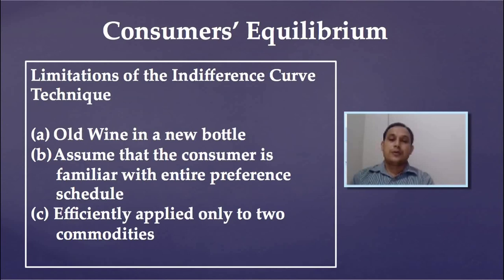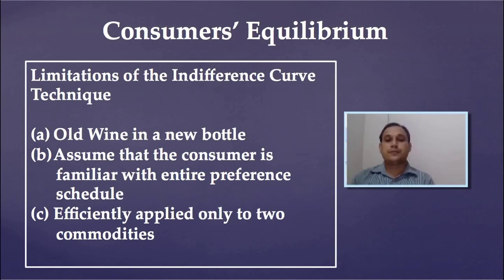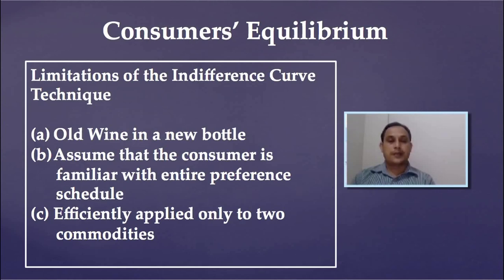In this online class, we initially talked about ordinal utility analysis and why it is considered superior to cardinal utility analysis. Next, we discussed indifference curve and indifference schedule, then the indifference map, then the assumptions of the indifference curve, then the properties, and finally how a consumer reaches equilibrium by applying the indifference curve technique. I hope from this class you gained some ideas about the indifference curve technique. Thank you for attending this class.